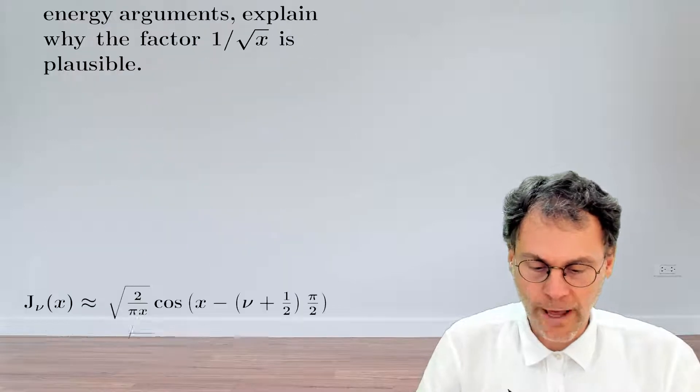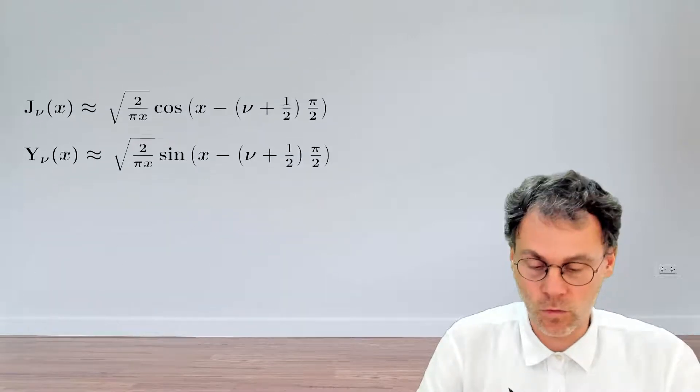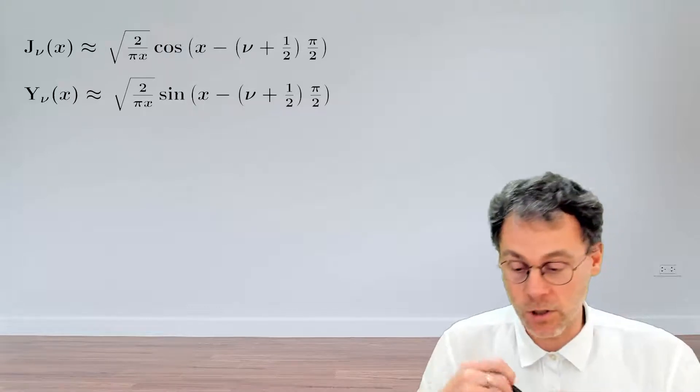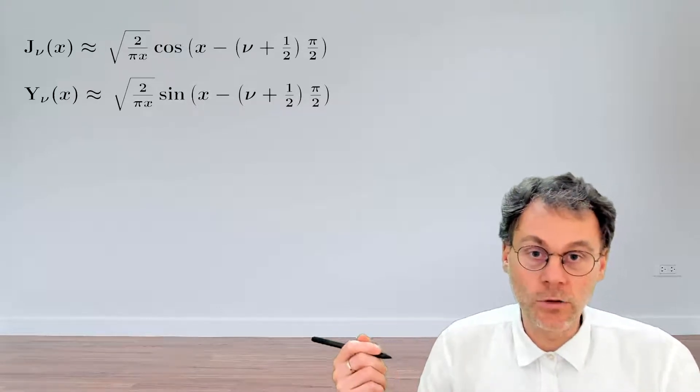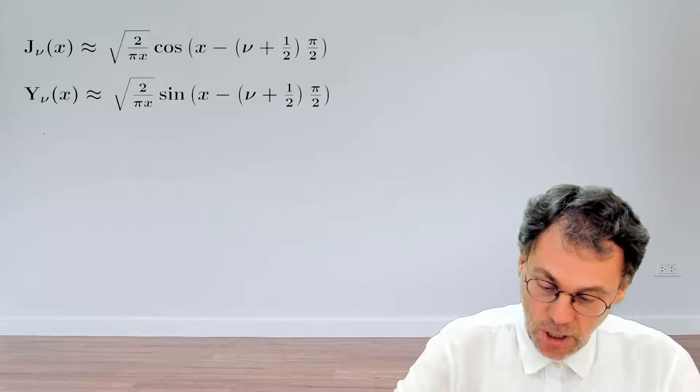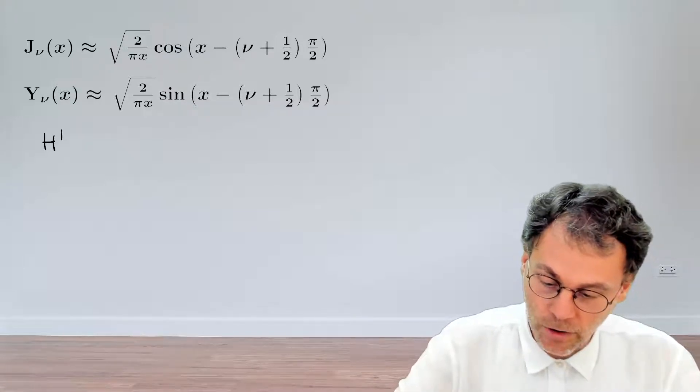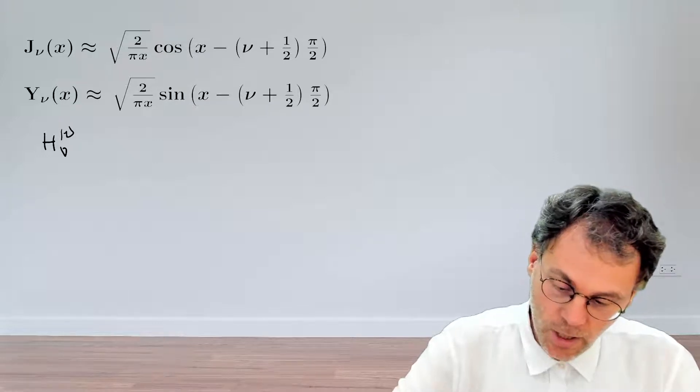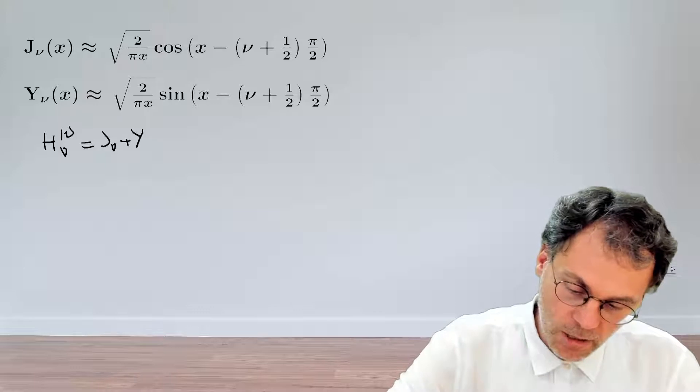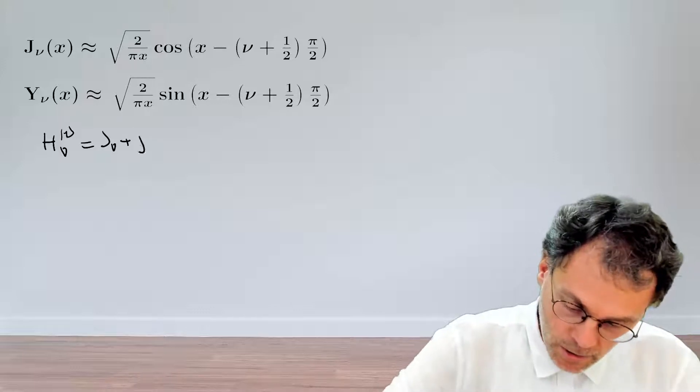So what we had from the previous exercise was the following. These were the asymptotic expansions for the j's and the y's. Now, the only thing we need to do basically is just use the definition of our Henkel functions. So the Henkel function of the first kind of order ν, that's the following linear combination of j and y, like so.